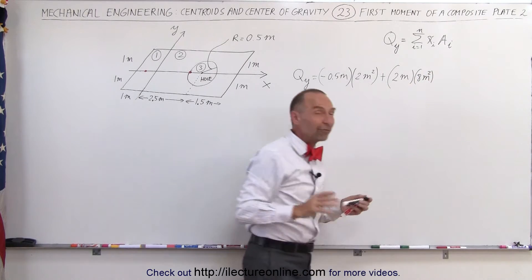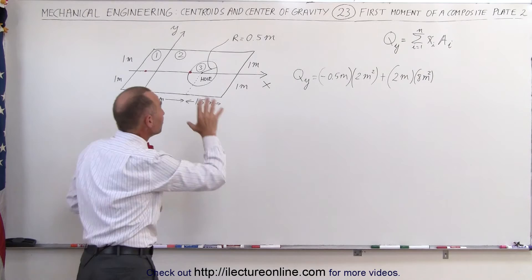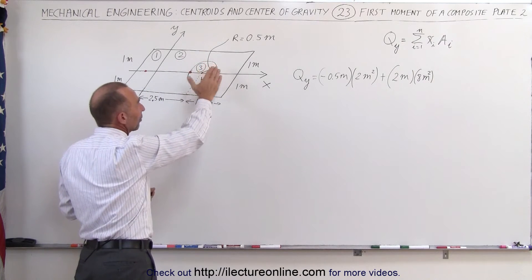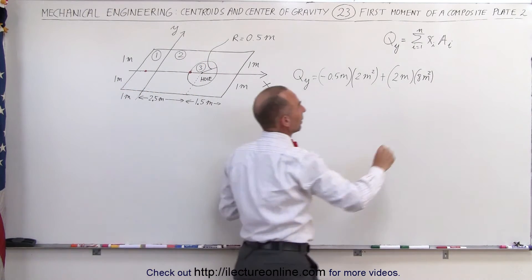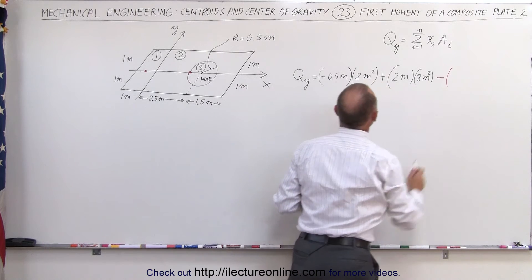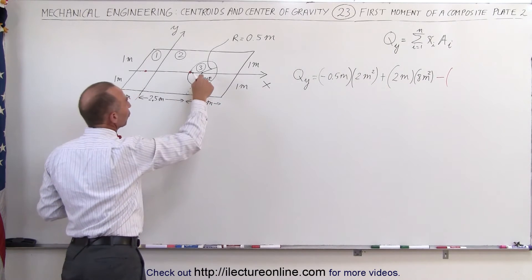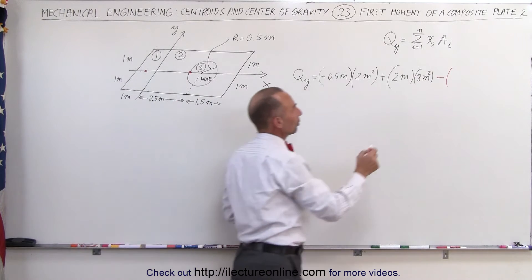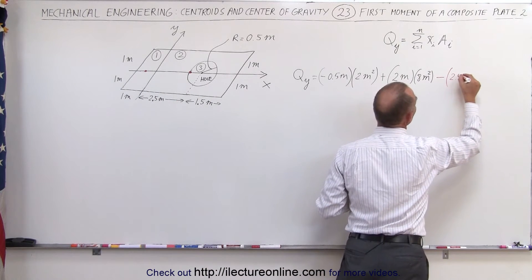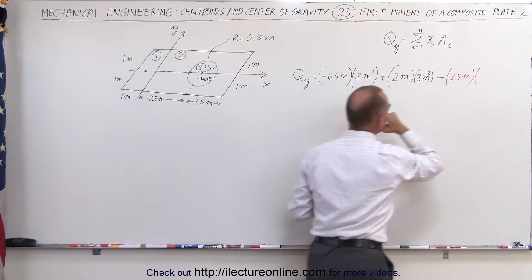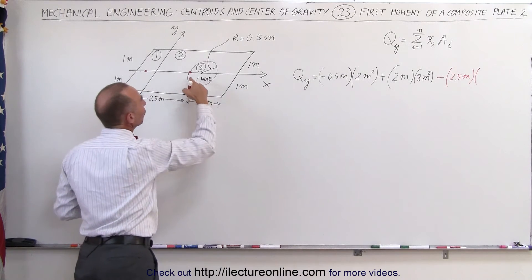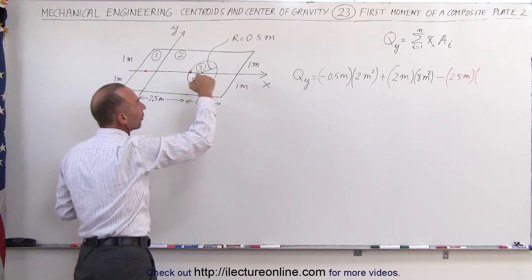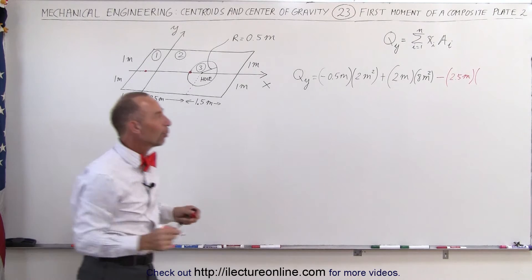And finally now I have the hole. Now remember the hole is missing area or missing mass so I need to subtract that, minus the center of mass of the hole is right here at the center two and a half meters away from the y-axis, so that's the x-coordinate of the center mass is 2.5 meters. And I multiply it times the area of the hole, the radius is 0.5 meters.